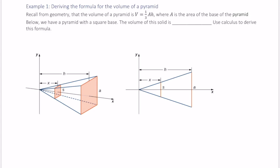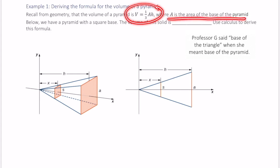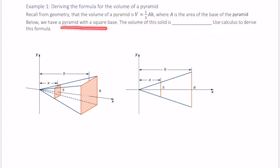So if you recall, the volume of a pyramid is given right here, where A is the area of the base of the triangle. In this case, we have a pyramid with a square base.